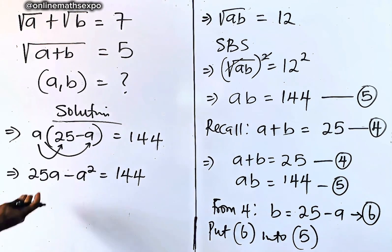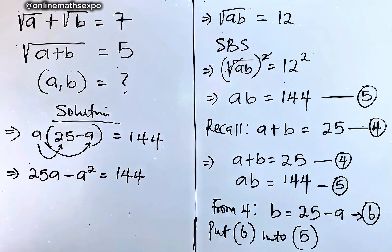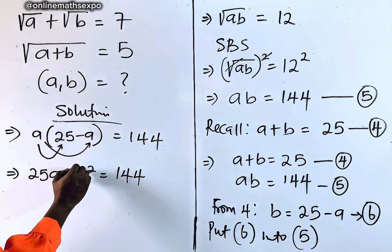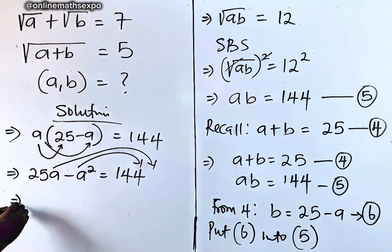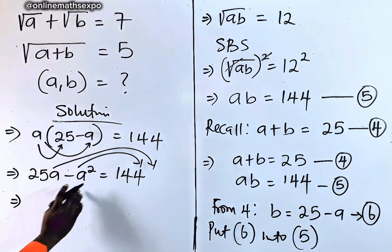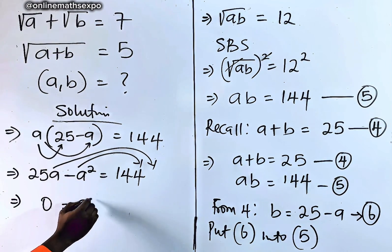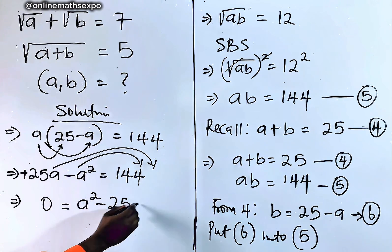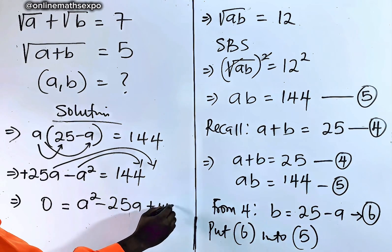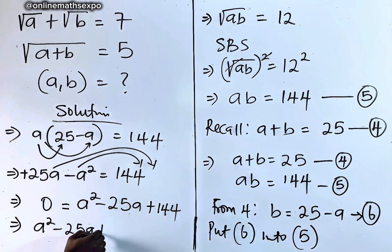This leads to a quadratic because the highest power of a is 2. Move all terms to the right to avoid negatives: 0 = a² − 25a + 144. So we have a² − 25a + 144 = 0.